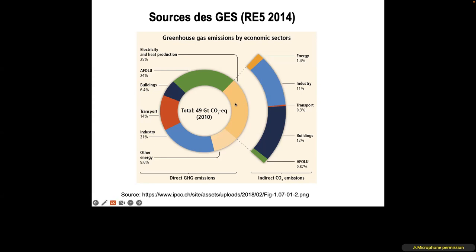In terms of carbon equivalent, the total was 49 gigatonnes CO2 equivalent in 2010, and for each sector, you have the proportions contributed by each domain. The energy production or electricity sector contributes the most at 25%, followed by agriculture, forestry, and land use, then the construction sector (BTP), transport, industry, and other sub-domains that often produce what are called direct emissions.